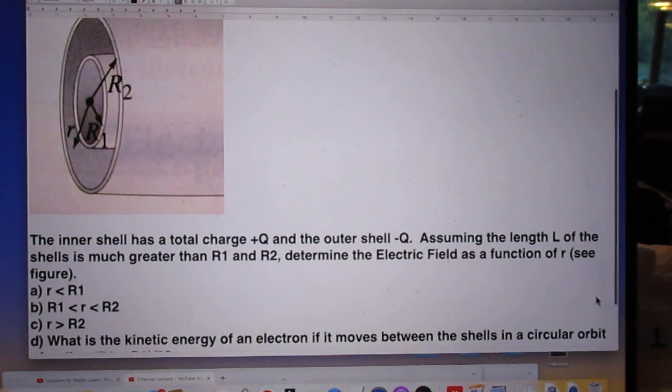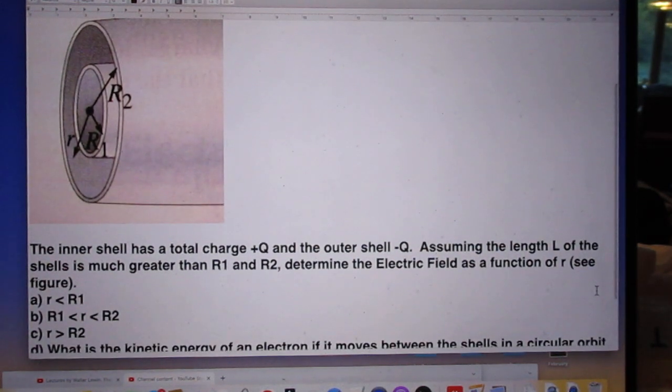The inner shell has a total charge of plus Q, and the outer shell minus Q. Assuming the length L of the shells is much greater than R1 and R2, determine the electric field as a function of lowercase r.